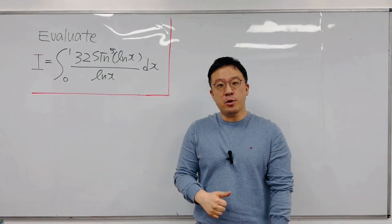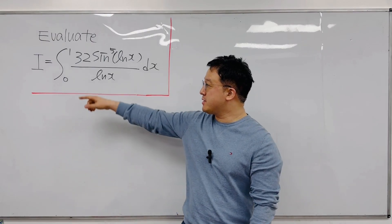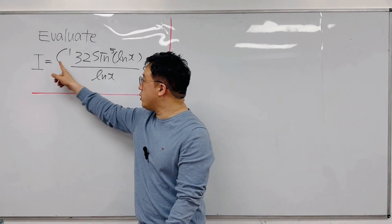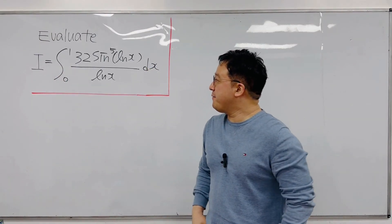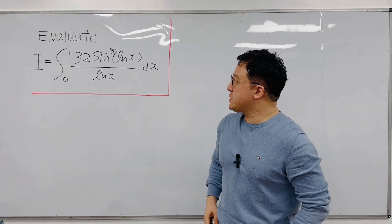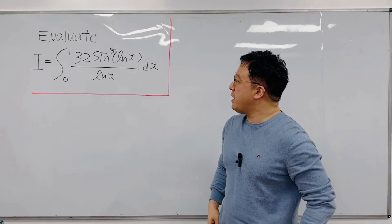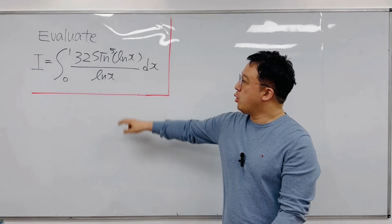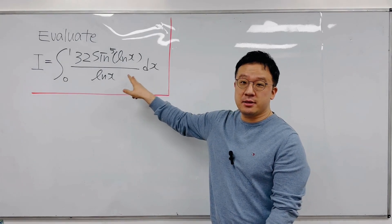So our question is: evaluate this integral from 0 to 1. We have 32 times sine to the power of 5 of ln x, over ln x, and dx.